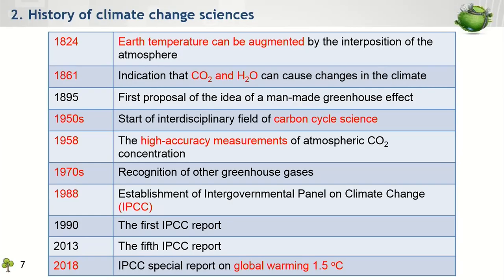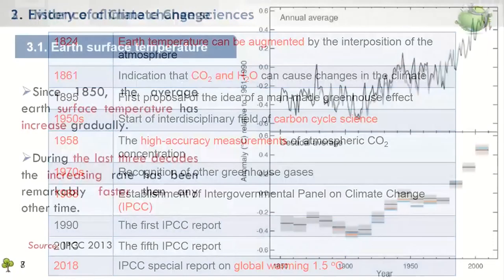Then in 1988, the Intergovernmental Panel on Climate Change was set up by the World Meteorological Organization and the United Nations Environment Program. Finally, in 1990, the IPCC delivered its first assessment report on the state of climate change, which predicted that the Earth's surface temperature would increase around 0.3 degrees Celsius per decade during the 21st century. Then in 2013 and 2018, two more reports were published, including the fifth assessment report and the special report on global warming of 1.5 degrees Celsius.